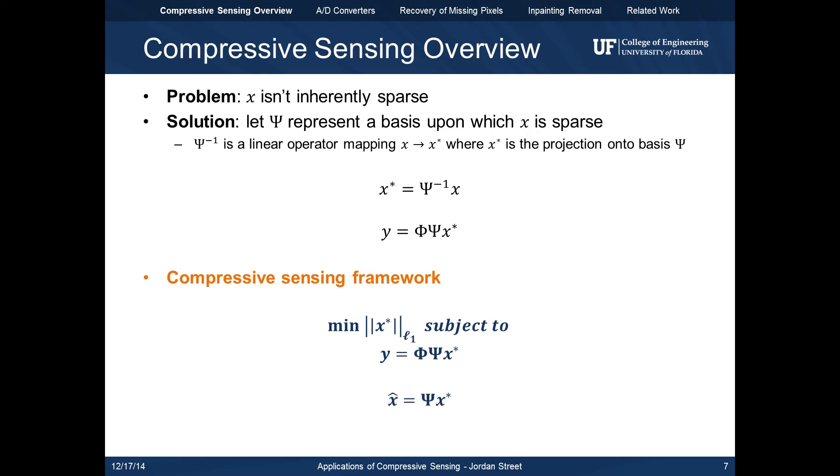Recall that x is our time domain signal and isn't necessarily sparse. We identify a basis psi, which x has sparse representation on, and in the following examples this is the DCT basis. X star now is a sparse signal which we can use in our L1 minimization. The equation y equals phi psi x star takes our sparse frequency domain signal x star, maps it to the time domain through psi, and evaluates it through our measurement matrix phi to match our measurements y.